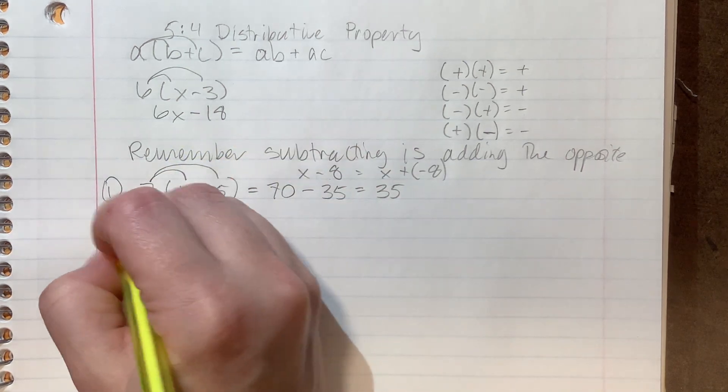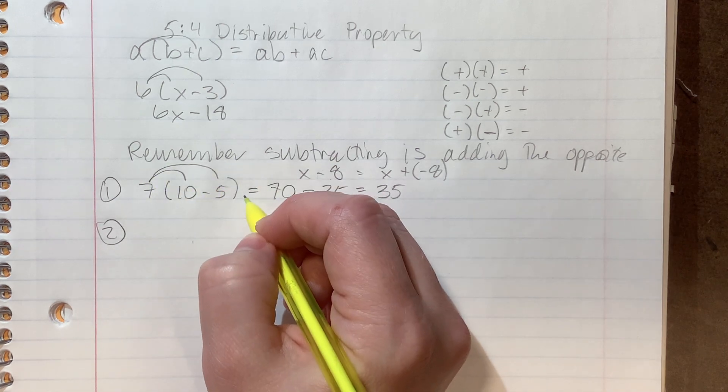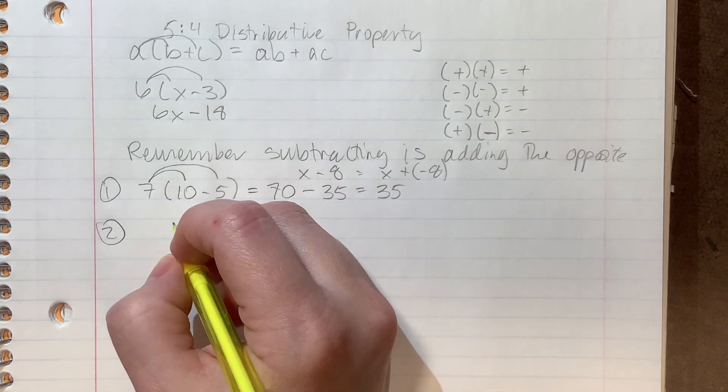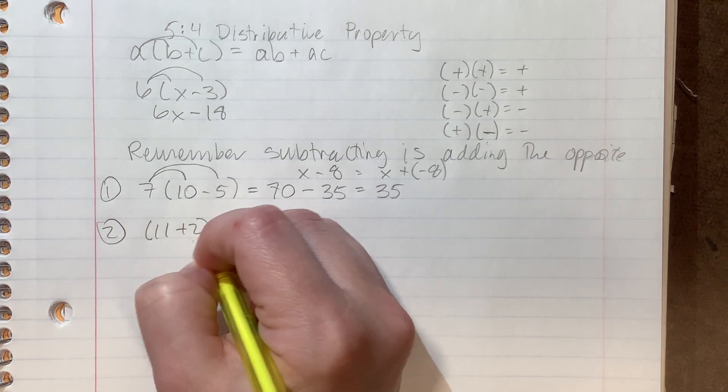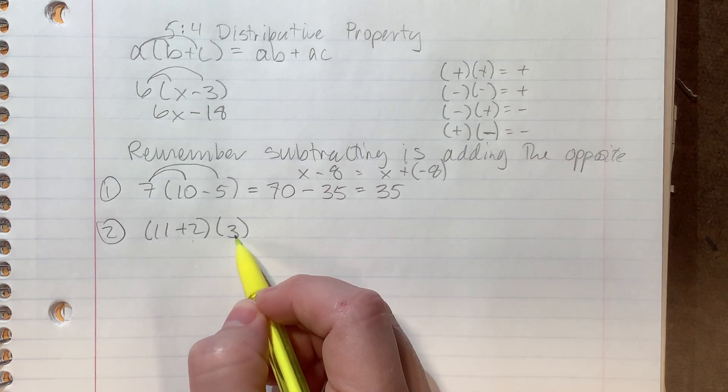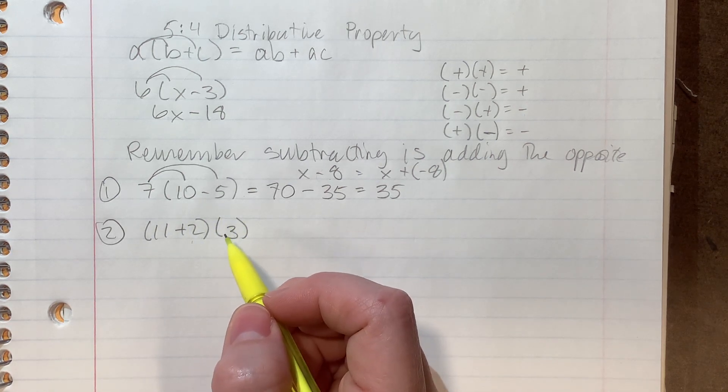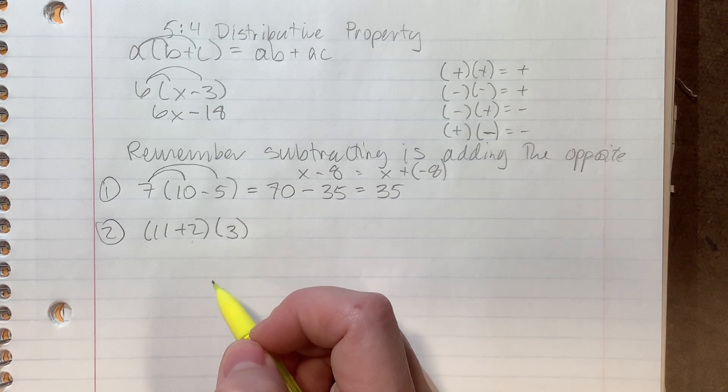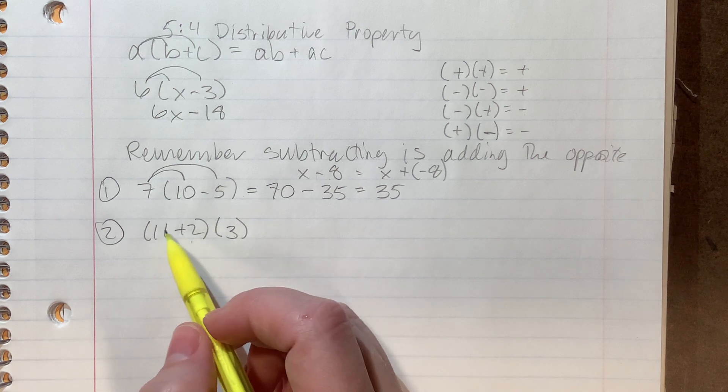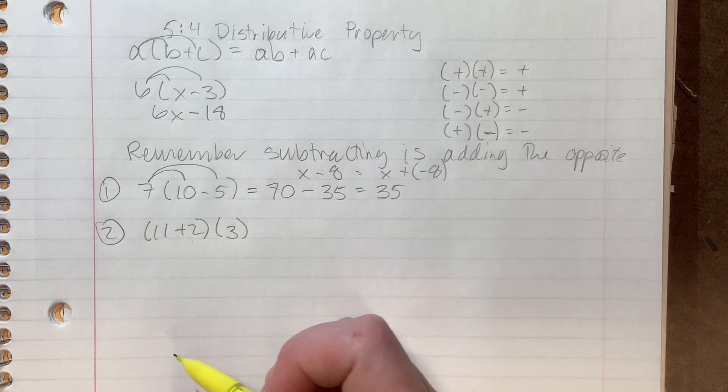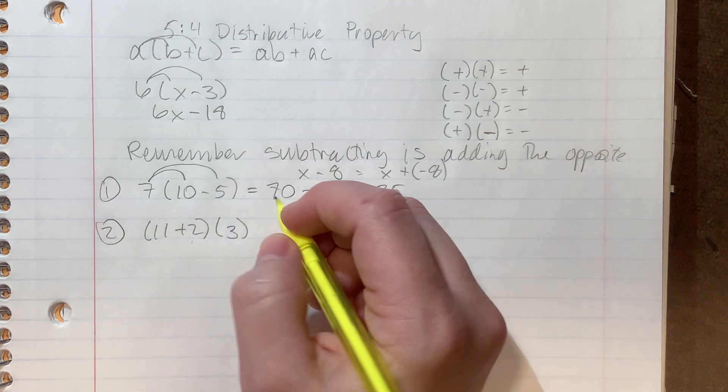Next one is going to be with numbers again. You can have the multiplying number on the outside of the parentheses on either side. So you might see it looking something like this. So you can have the three or the whatever number you're multiplying by on the other side of the parentheses. It still means the same thing. Now again, we could, in theory, order of operations tells us to do this first. And because it's all numbers, we can. And that would give us 13 times three.